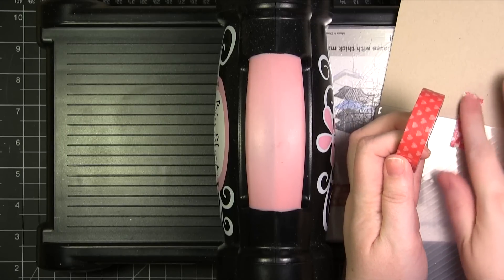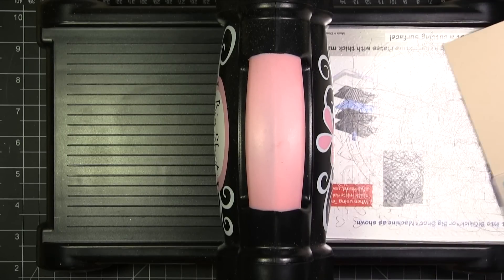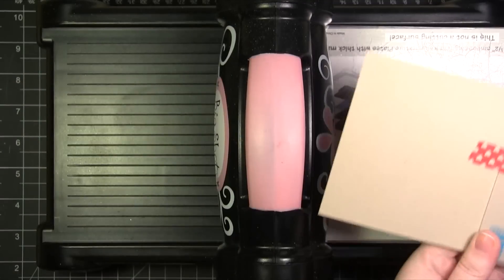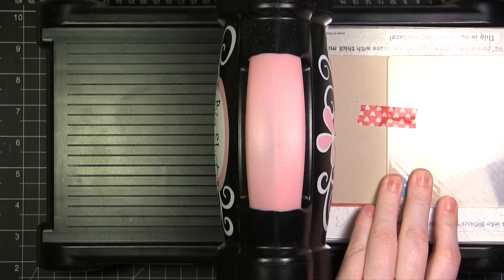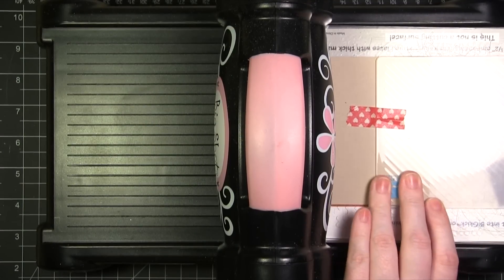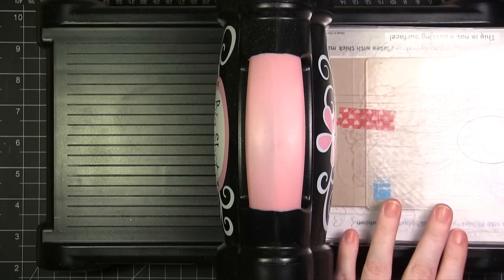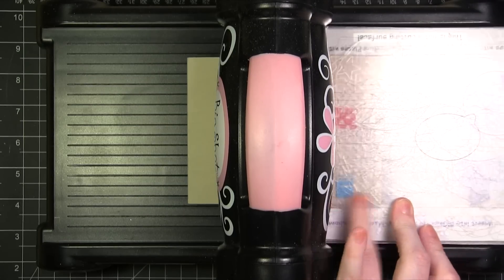You could also use masking tape or anything like that just to hold it in place and you don't want it to be permanent stickiness. Where it's hanging out of the embossing folder it will not emboss. I'm going to go ahead and run this through.